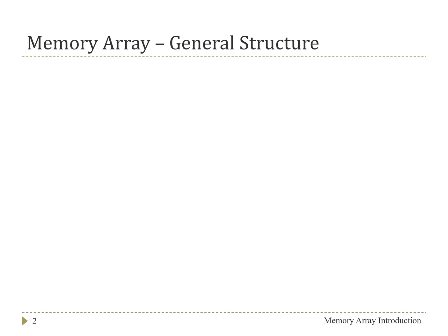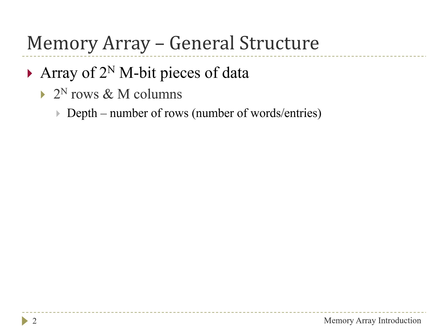A memory array itself is generally structured as an array of 2 to the n m-bit pieces of data. This structure is basically broken down into where you have 2 to the n rows, and each one of those rows has m columns or n bits within it. Oftentimes we may mention the depth of the array, which refers to the number of rows in the array, which could also be thought of as the number of words or the number of entries that are stored in the memory array.